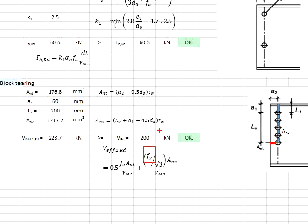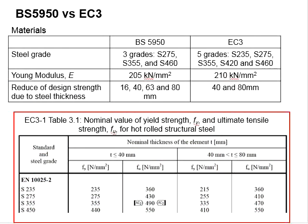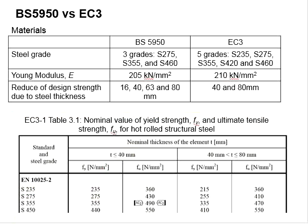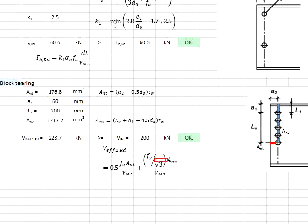Next, you will need to have the fy which is equivalent to the grade of steel. You may refer to the table 3.1. For the thickness of the web less than 40 mm, grade 275, fy will be equal to 275 newton per mm square.